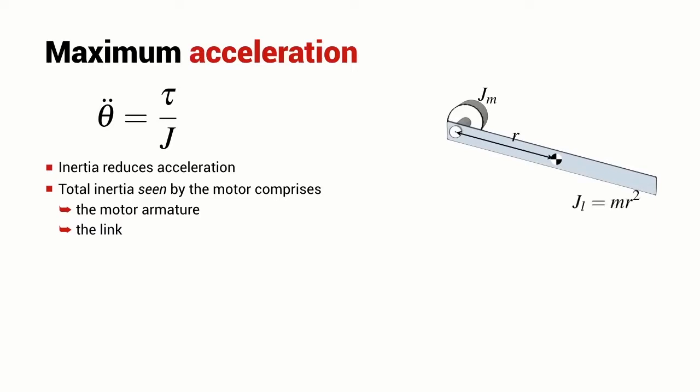In this case, I've drawn a very simple rectangular prism for the link and the inertia of that is M times R squared. The R squared is problematic because it means that the inertia grows very quickly with the size of the link.